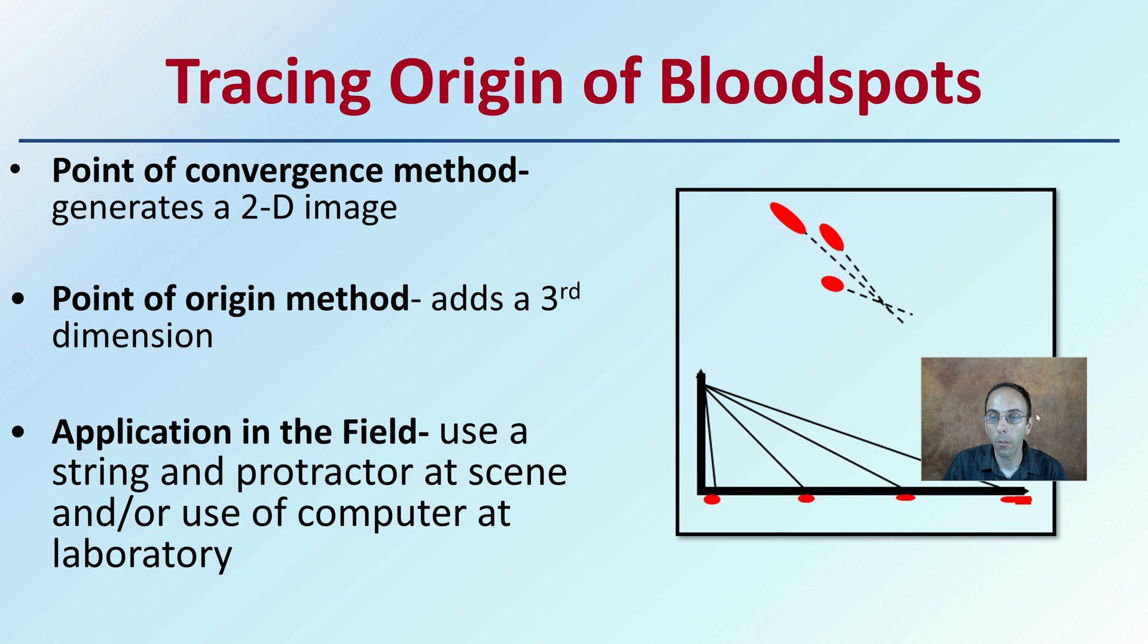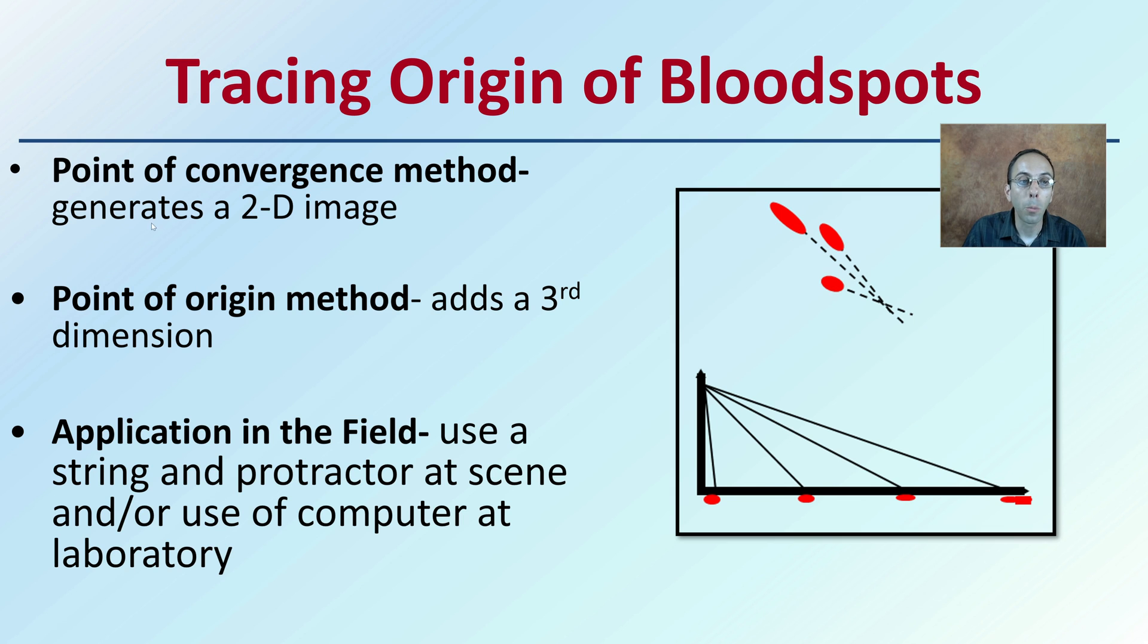Tracing origin of the blood spots - we have the point of convergence method which generates a 2D image, but then we also can take it a step further to point of origin method that adds a third dimension to it. The application in the field, of course, is to use a string and a protractor at the scene and/or use a computer in the laboratory to determine that point of origin, which will help tell the story of what occurred at the particular crime scene.